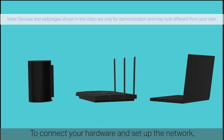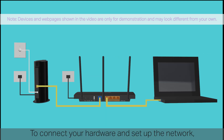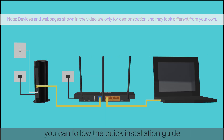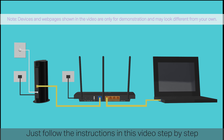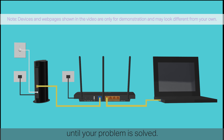To connect your hardware and set up the network, you can follow the quick installation guide or start with the quick setup video. But what happens if you still can't access the internet afterwards? Don't worry, just follow the instructions in this video step by step until your problem is solved.